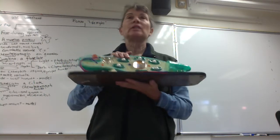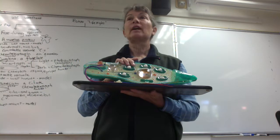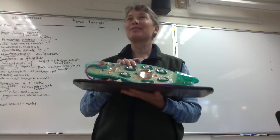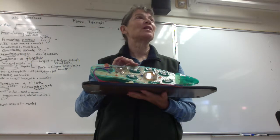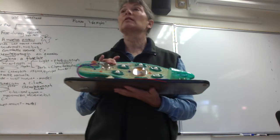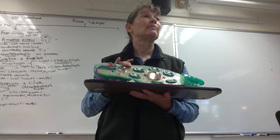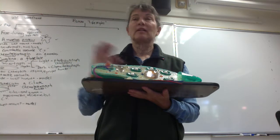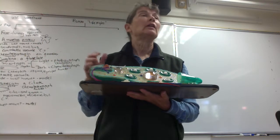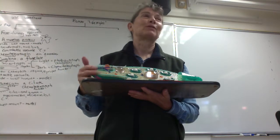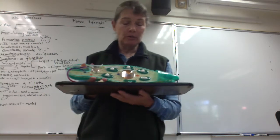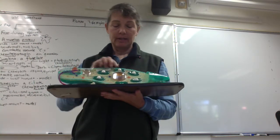So when euglena is in the presence of light, what can they do? Oxygenic photosynthesis. So in light they're photoautotrophs. But in the dark they return to being hunters — chemoheterotrophs again. An organism that can switch between being a photoautotroph and chemoheterotroph is called a myxotroph. Let's go over a few of the structures here.